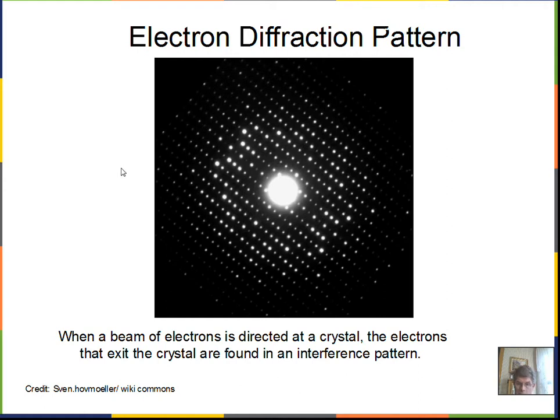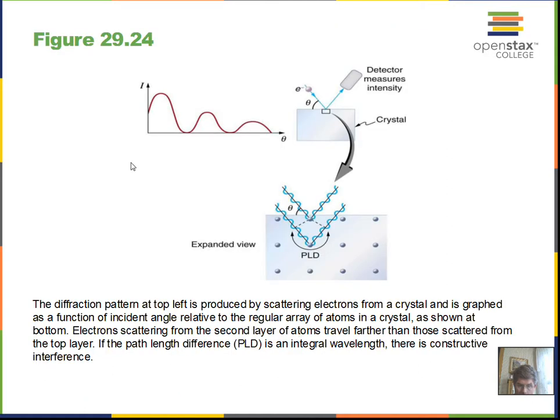Objects, when they travel, act like a wave. They have a wavelength. So we'll explore that in just a little bit. But here's a diagram from our book that shows, again, the electron beam coming in with the wave nature of the electron represented in the drawing. And the electron scatters off of atoms in the crystal.